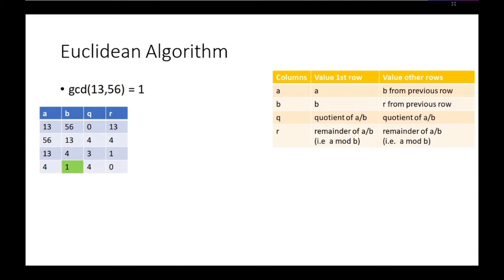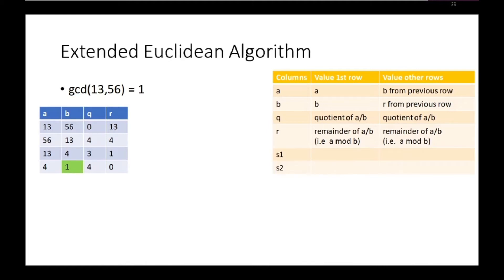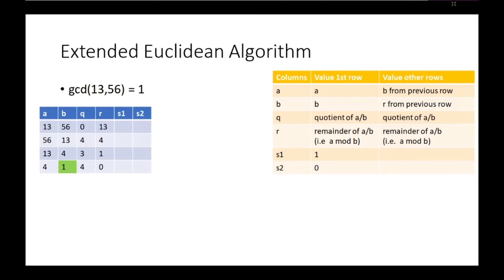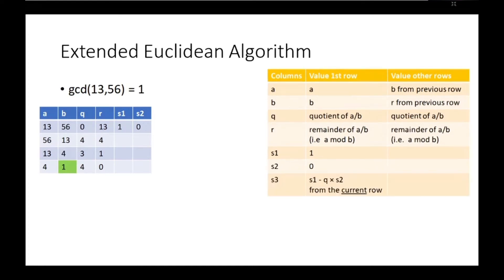If we are using the extended Euclidean algorithm, the table will have more columns — for example, S1 and S2. Those are 2 new columns with values 1 and 0 on the first row of the table. But there's another column, S3, and it has the value S1 minus Q times S2, with S1, Q, and S2 from the current row, which is in this case the first row of the table.